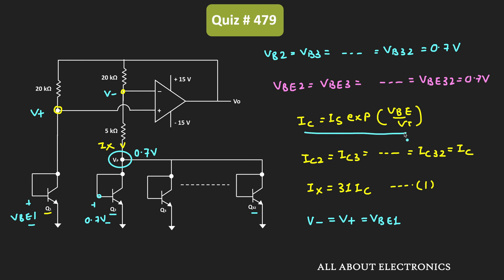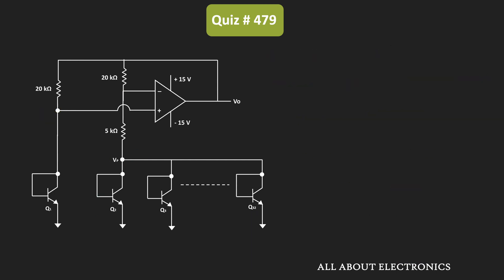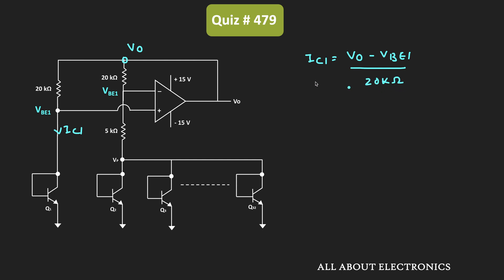As per this relation, the collector current IC1 = IS × e^(VBE1/VT), where VT is the thermal voltage. The voltage at this node is equal to Vout, so we can say that IC1 = (Vout − VBE1) / 20kΩ. The current flowing through this 20kΩ resistor is the same as IC1, because since the op-amp is ideal, no current flows into the op-amp terminals.